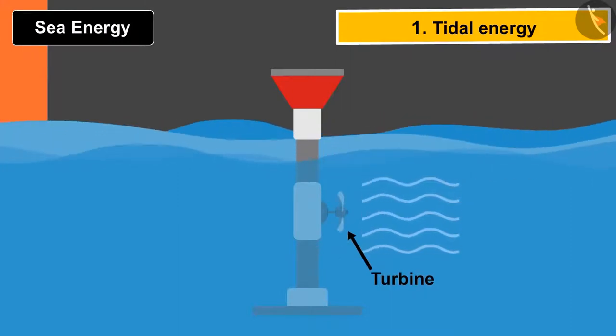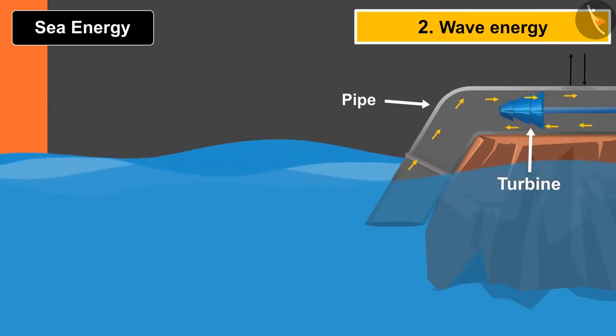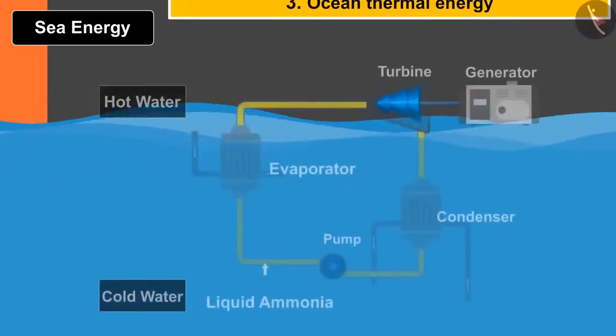In wave energy, a huge pipe is placed near the shore of the ocean. Due to the motion of the wave, the air pressure in the pipe increases and the turbine blades get rotated.